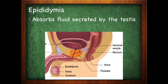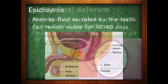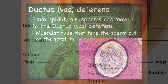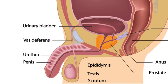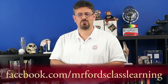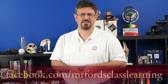The epididymis will also absorb fluid created by the testes, and sperm there can remain viable — meaning remain alive and able to cause pregnancy — for 40 to 60 days. From the epididymis, sperm are then moved to the ductus vas deferens. The vas deferens is a muscular tube that takes the sperm out of the scrotum. On my business Facebook page, I ask my students a little joke: what's the difference between a penis and a garden hose? And of course, there's a vas deferens.